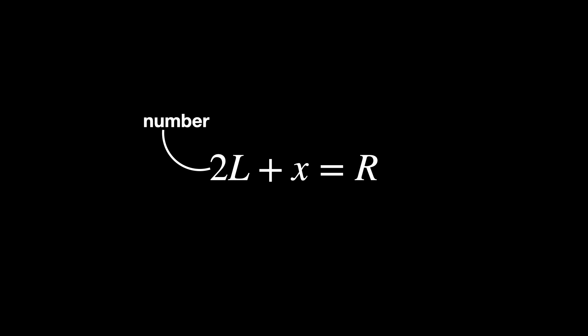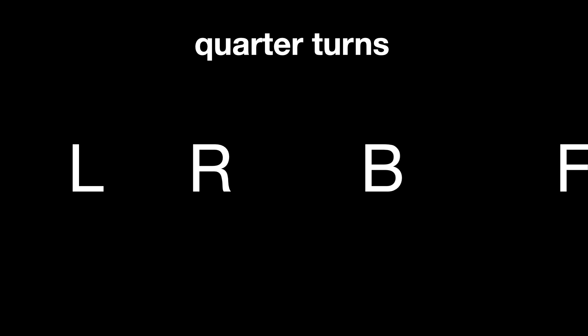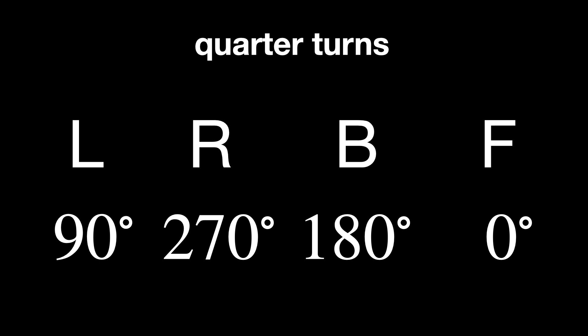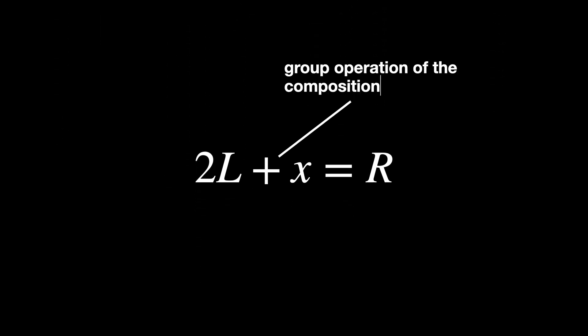What happens when the equation turns into this — two lefts and what is a right? The study of equations like that is what group theory is all about. The group consists of actions: quarter turns — left L, right R, back B, and forward F. Each of these actions corresponds to a rotation of 90 degrees, 270 degrees, 180 degrees, and 0 degrees, respectively. What looks like addition is actually the group operation of the composition of rotations.